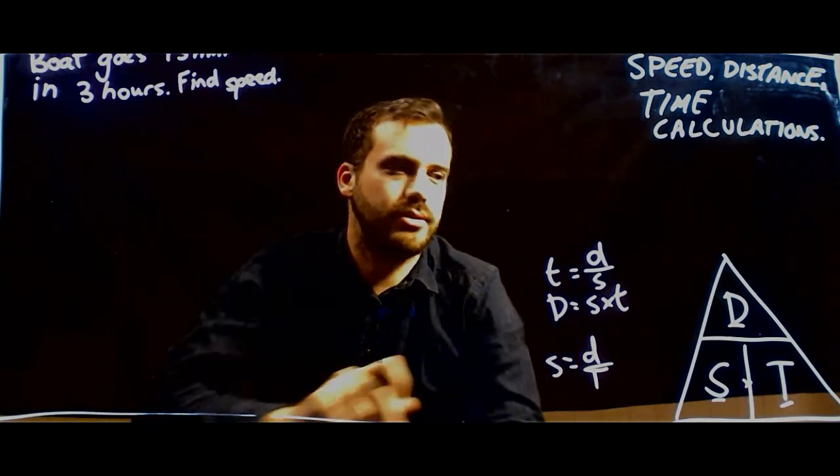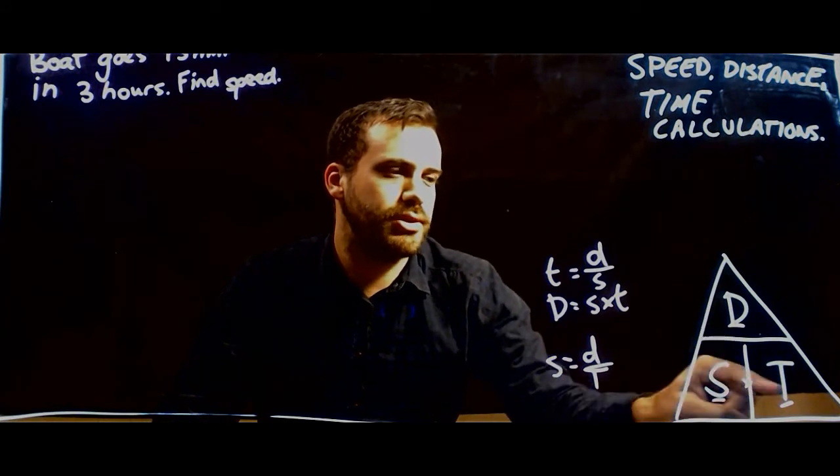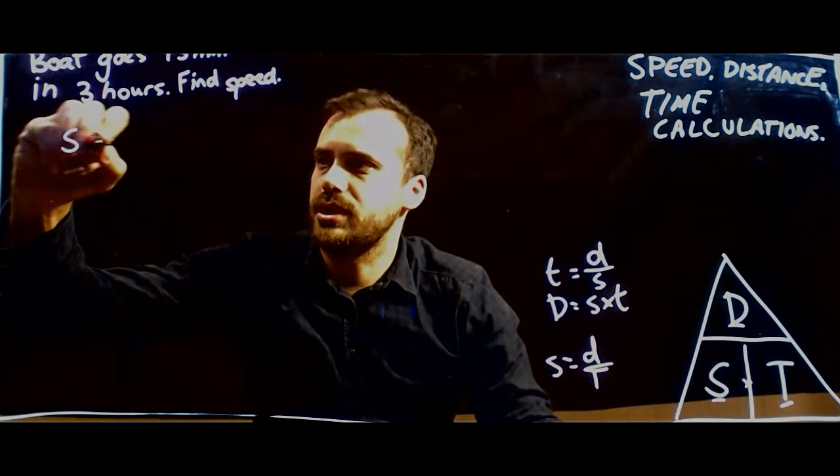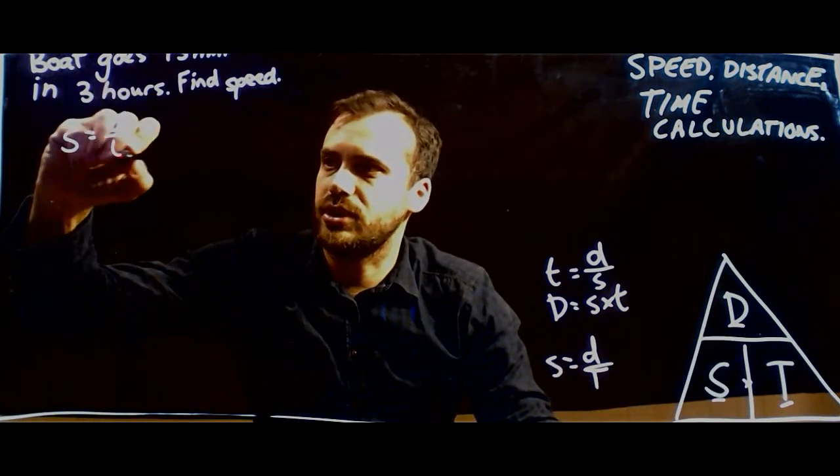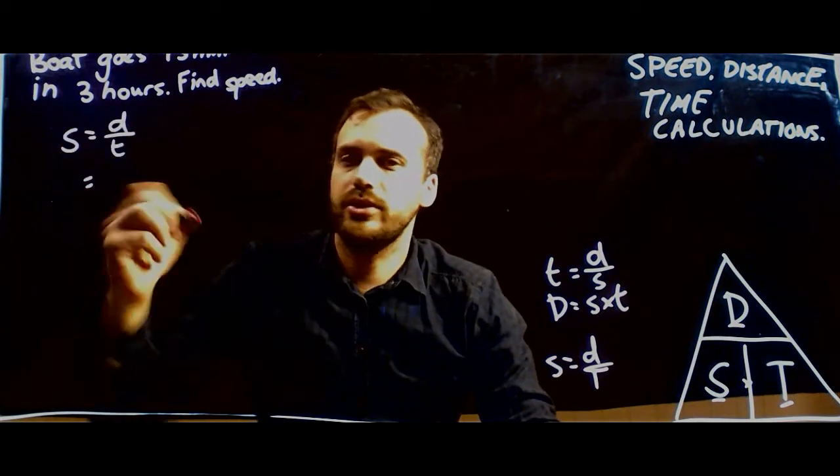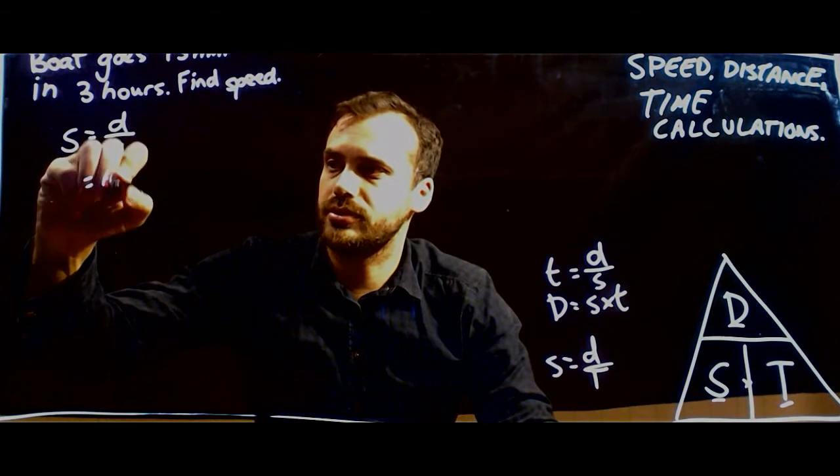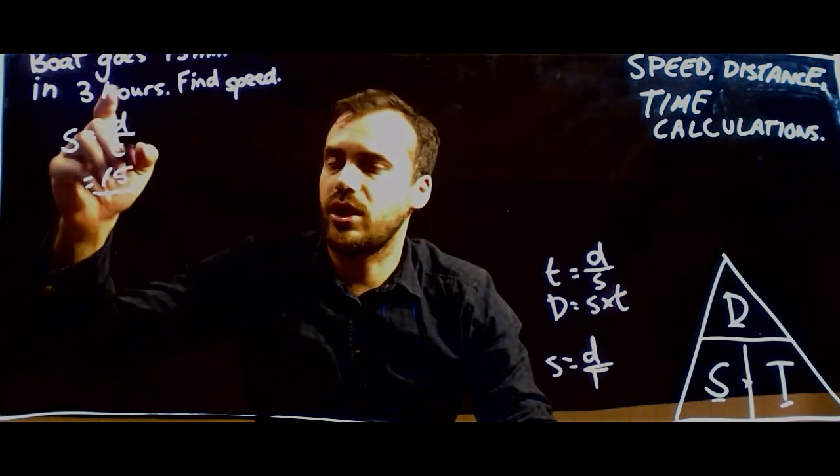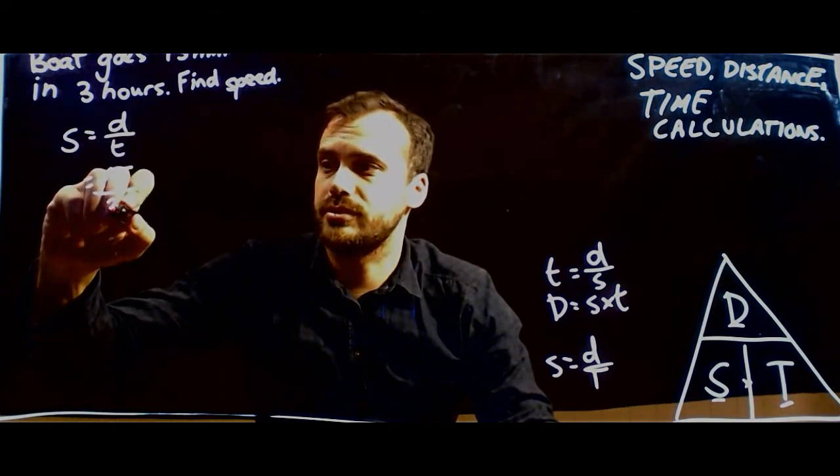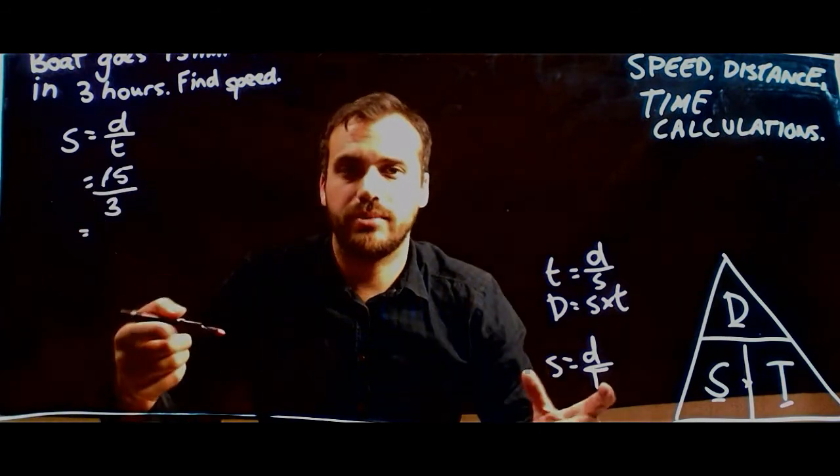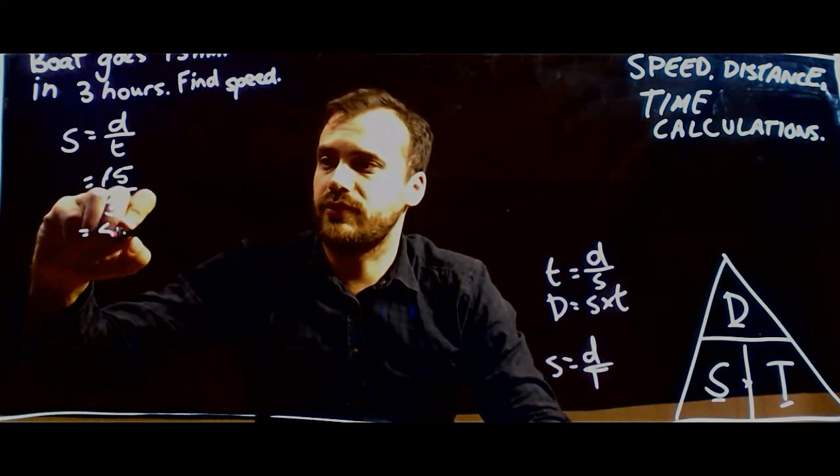So this question is going to be pretty straightforward. We're trying to find speed, so we know that speed is equal to distance over time. Speed is equal to distance over time. We know that the distance that this thing travels is 15 nautical miles. And we know that the time it takes is three hours.